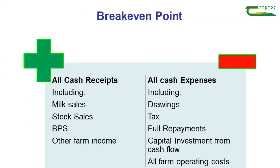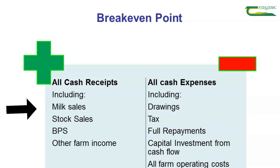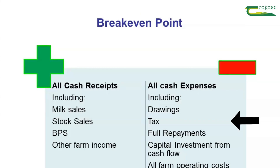In calculating the break-even price, we look at all cash receipts, and this includes milk sales, stock sales, basic payment and other supports, plus other farm income. On the outgoings, we look at all cash expenses including drawings — that is the money taken from the farm to run the family home — tax, full repayments to the bank, and capital investment taken from cash flow, and all farm operating costs.